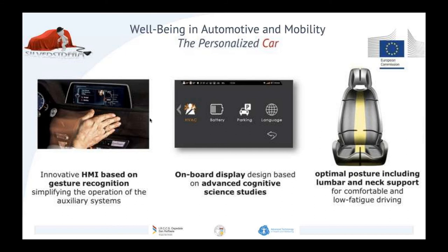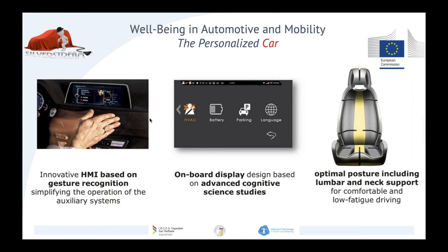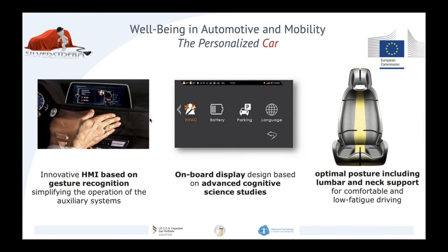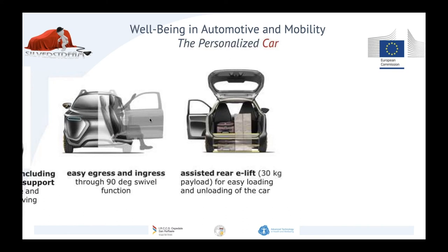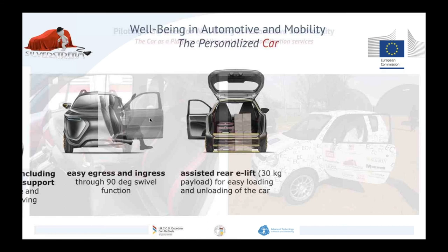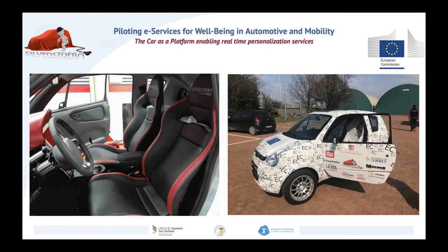We designed a chair that moves automatically and helps you get in and out of the car according to your needs, and optimizes posture to minimize risk of backbone or cardiovascular problems from unregular posture when sitting in a car. We also put a robot in the trunk to handle loading and unloading of weight, so the strain is on the car's power, not your backbone. This is the car we tested in San Raffaele streets and premises.